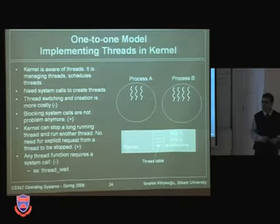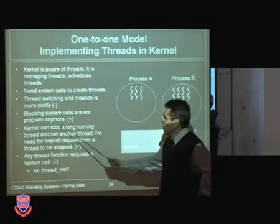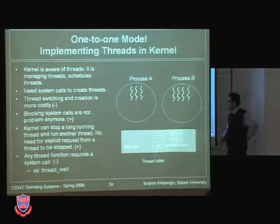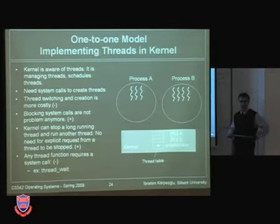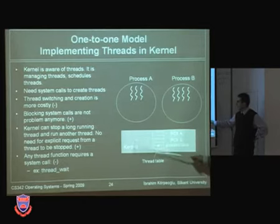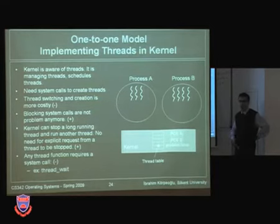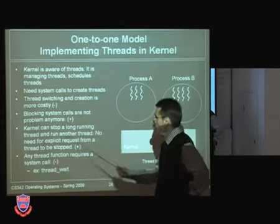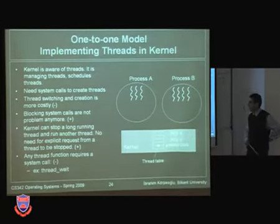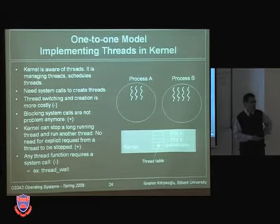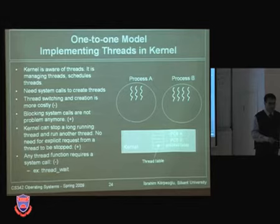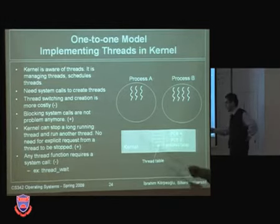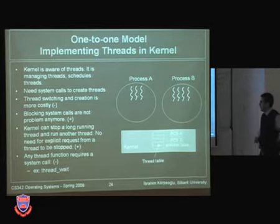Blocking system calls are no longer a problem. The kernel also stops long-running threads and runs another — all scheduling decisions for threads are done by the kernel. The kernel receives periodic timer interrupts, monitors how long each thread has used the CPU, and decides whether to continue with the same thread or switch. No explicit thread yield call is needed from a thread to stop itself.